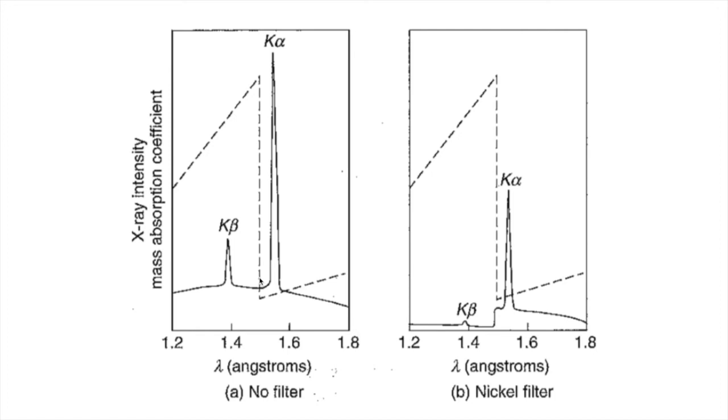We can try to find a material where the absorption is really high in the area that we want it to absorb, so K-beta, and then really low where K-alpha is. For copper we find that the perfect filter is nickel.